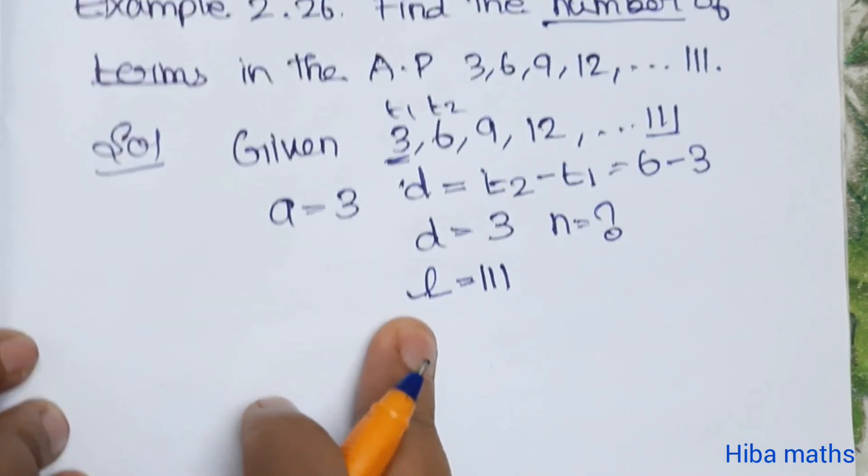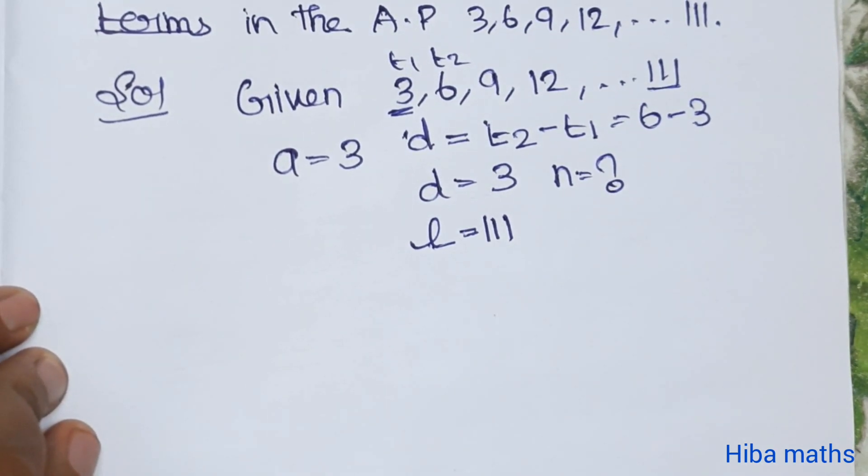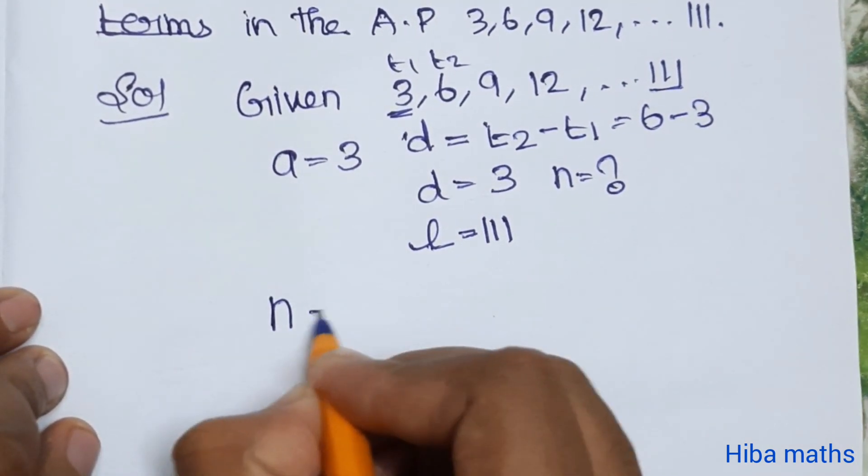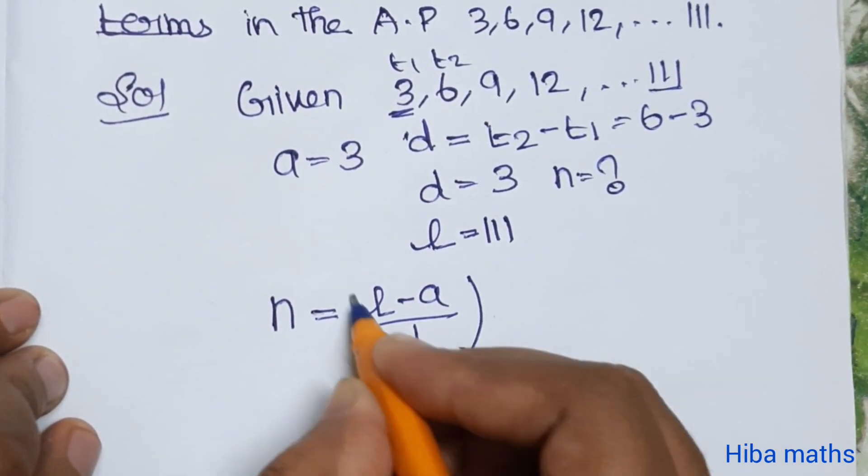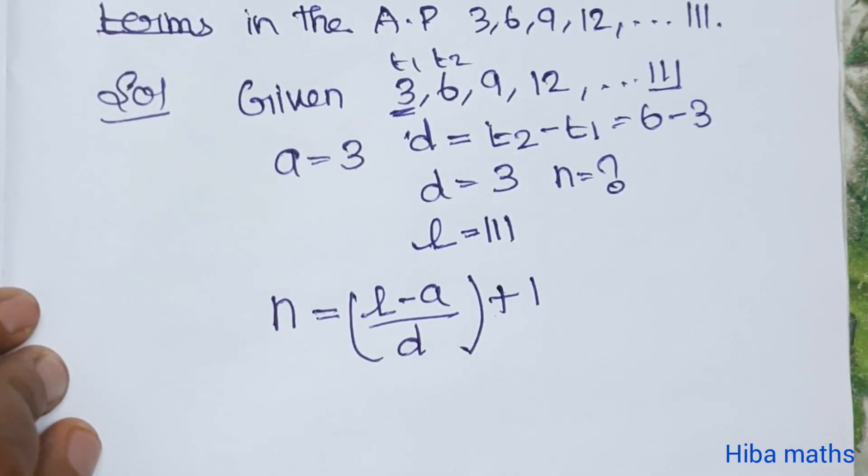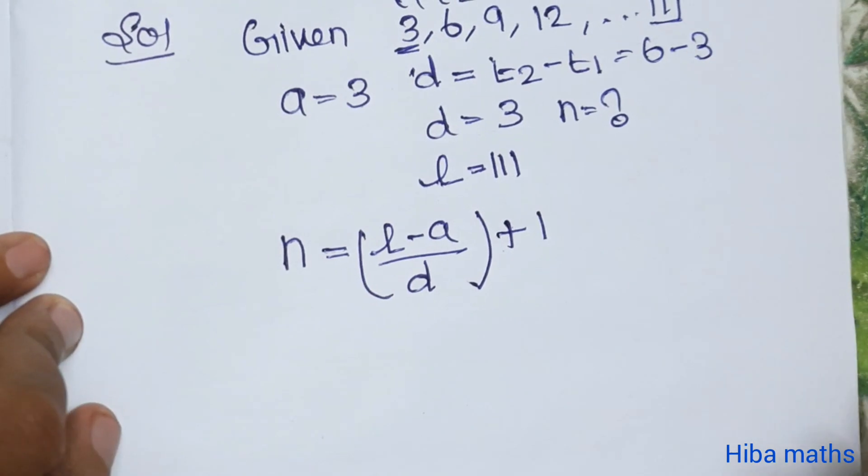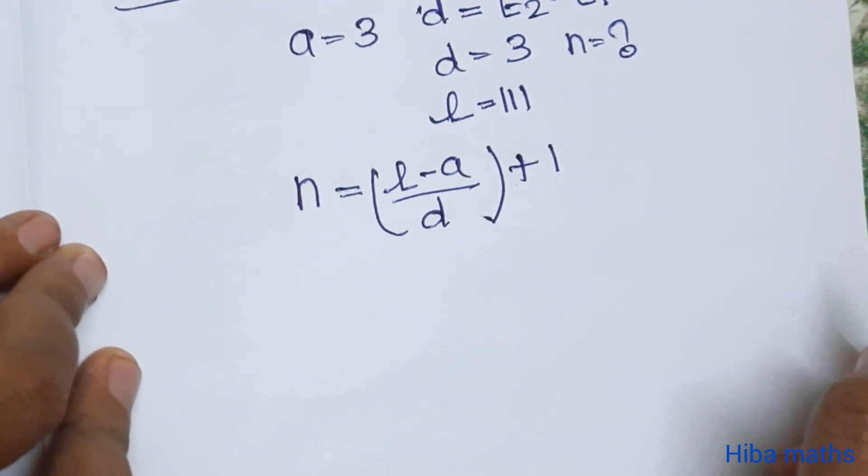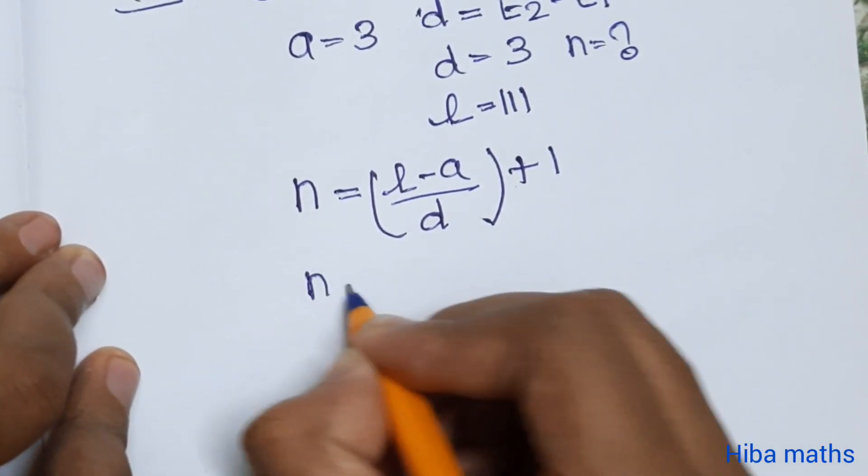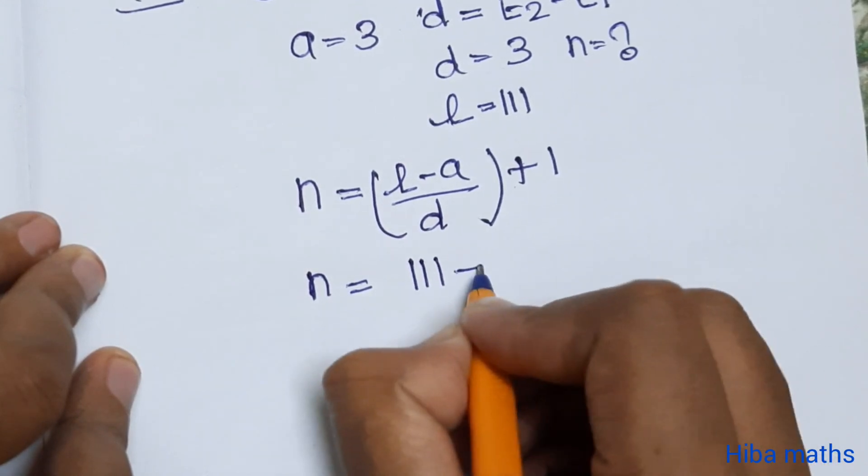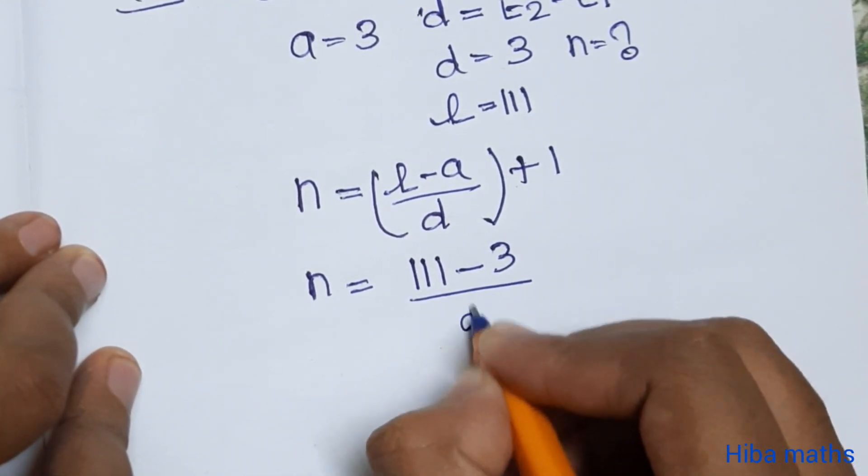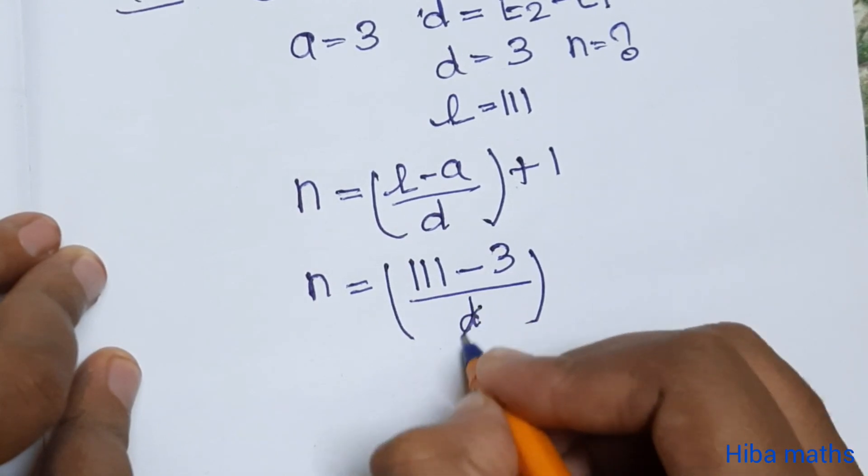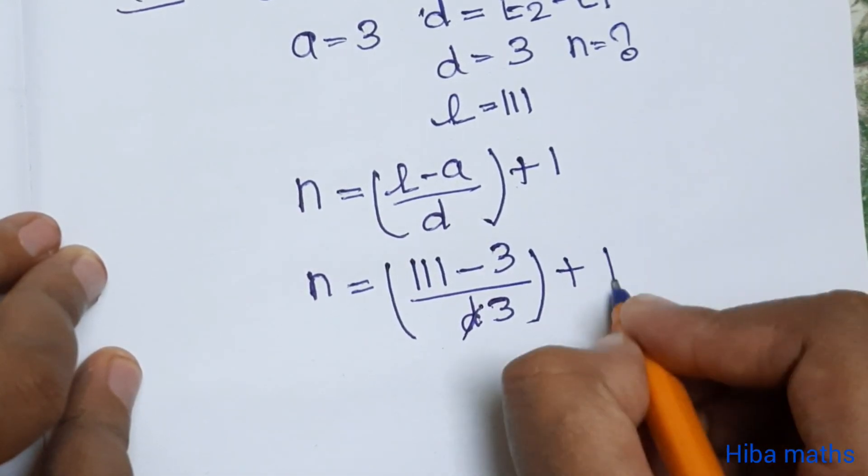Let's use the formula: n equals (l minus a) divided by d, plus 1. Substituting the values, n equals (111 minus 3) divided by 3, plus 1.